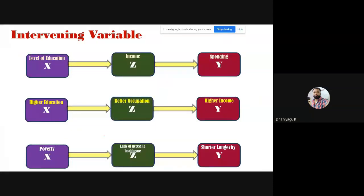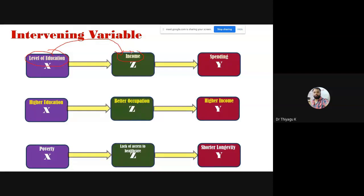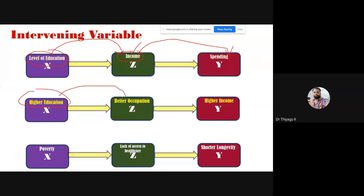What is the intervening variable? The intervening variable is like a mediator, but here there is a relation from X to Z and from Z to Y. For example, the level of education — if it increases or decreases, it may influence income. If one person gets a higher degree, there is a chance the income may be high. Some people getting higher education may get a better occupation, through which they may get a higher income. That kind of direct intervening influence is the intervening variable.